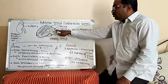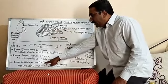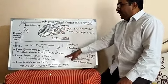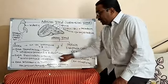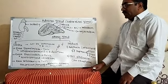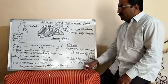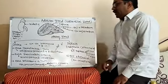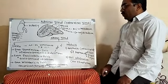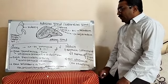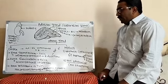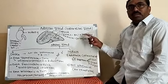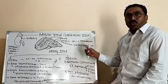Zona reticularis is the innermost zone of the adrenal cortex. It is thin in nature and secretes a group of hormones called sex corticoids, also called gonadocorticoids. These are different types of hormones which are actually produced in the testis and ovary.